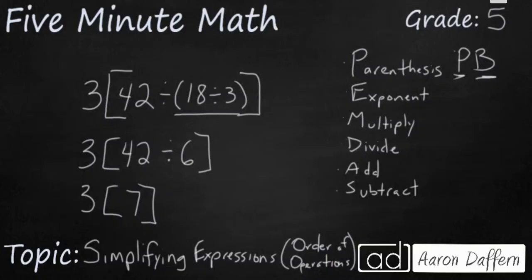Whenever you have a 3 next to a parentheses or next to a bracket and there is no operation shown, it always means multiply. So really, this 3 bracket 7 is the same thing as 3 times 7 or sometimes we'll show it as a dot. 3 times 7. Anyway you look at it, your answer is 21.